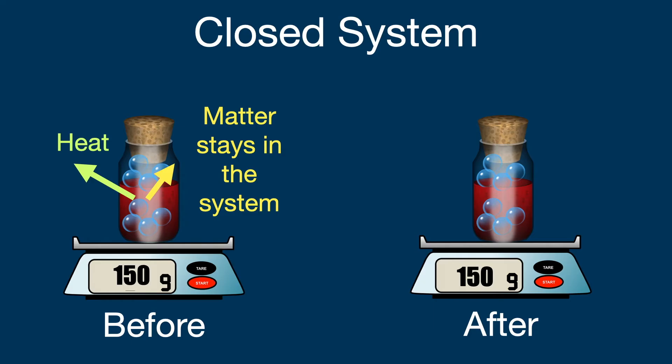So as you can see here, the before mass and after mass are staying the same because matter stays in the system and cannot leave, and matter cannot enter the system either.